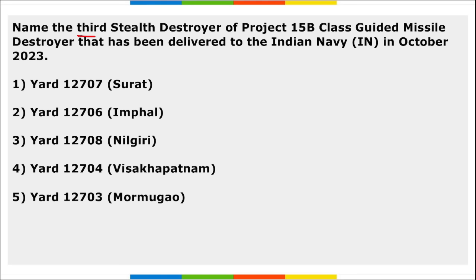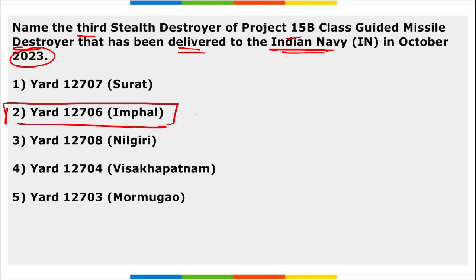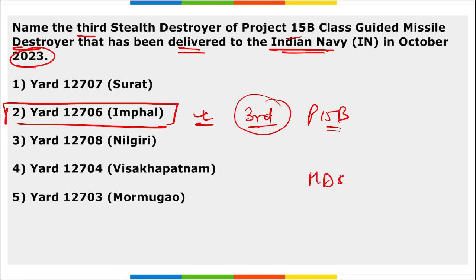Next, name the third stealth destroyer of Project 15B class guided missile destroyer delivered to the Indian Navy in October 2023. It is Yard 12706 Imphal. This ship was designed by the Indian Navy's Warship Design Bureau and built at Mazagon Dock Shipbuilders Limited (MDL), and was delivered to the Indian Navy.